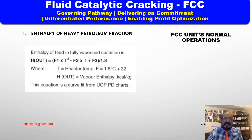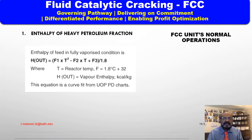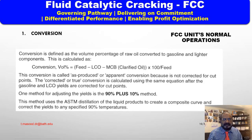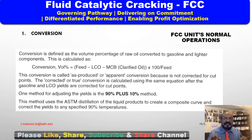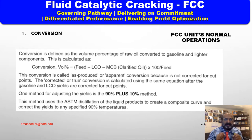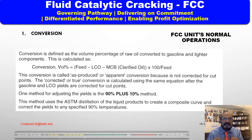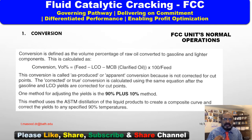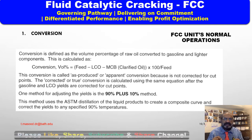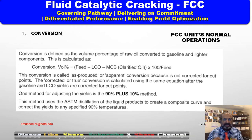Conversion is defined as the volume percentage of raw oil converted to gasoline and lighter components. Conversion (volume%) = (Feed − LCO − MCB clarified oil) × 100 ÷ Feed. This is called the produced or apparent conversion because it is not corrected for cut points. The corrected or true conversion is calculated using the same equation after the gasoline and LCO yields are corrected for cut points.